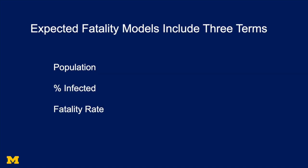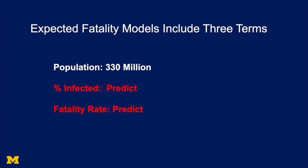When you look at this model, there are three terms: the population, the percentage infected, and the fatality rate. The population we know — it's roughly 330 million, that's a fact. The percentage infected and the fatality rate are things we have to predict, and this is where models end up being really useful. If we don't predict, we're just going to learn from data and find out after the fact whether 100,000 or 2.5 million people died. So this is why models become so important — because if we can predict with accuracy, we can hopefully take actions to reduce that number.